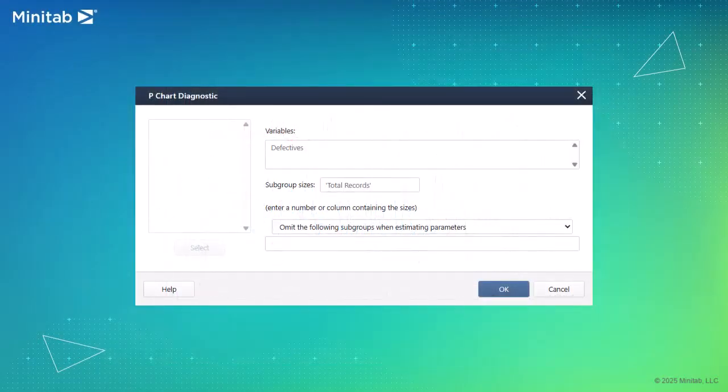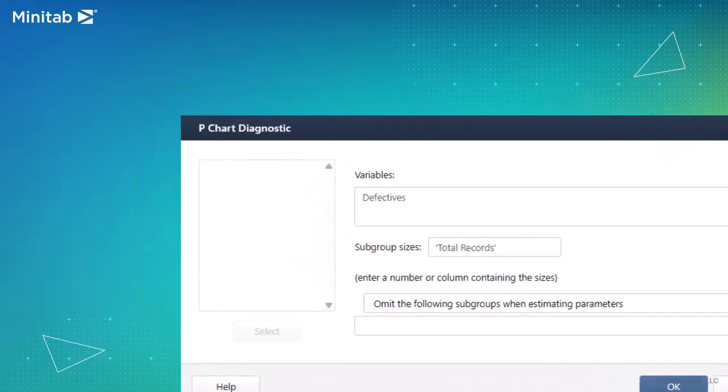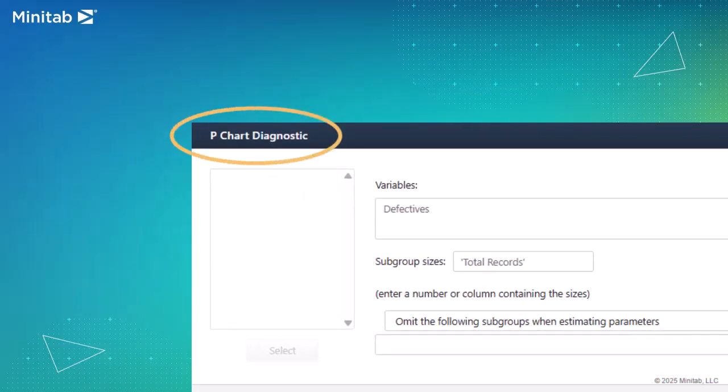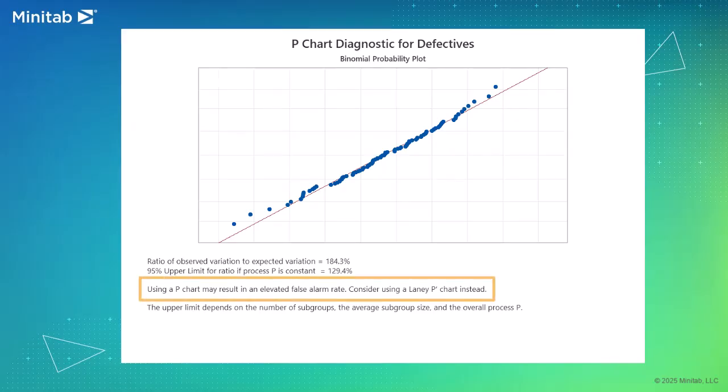To learn what kind of P-Chart makes sense for your data, use the P-Chart Diagnostic Test in Minitab. The results will clearly show if you should use a traditional P-Chart or a Laney P-Prime chart to monitor defectives.